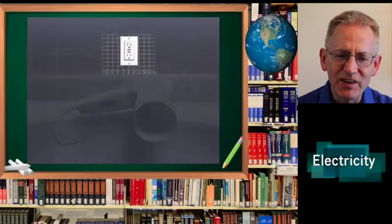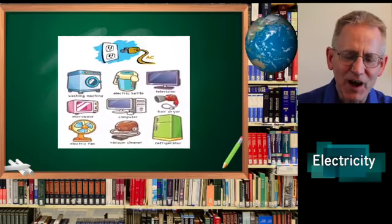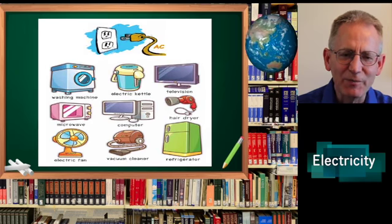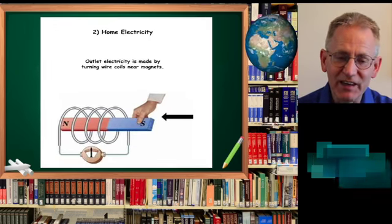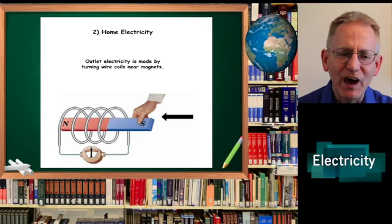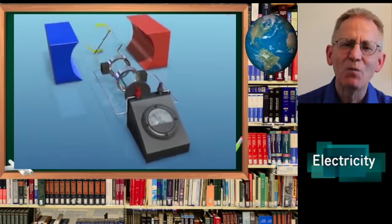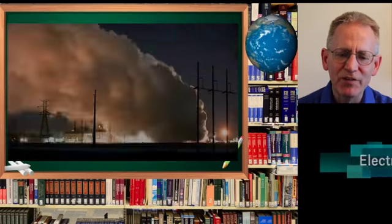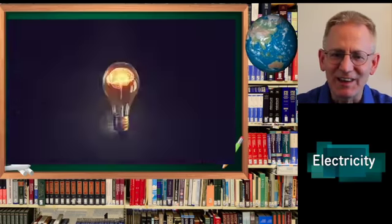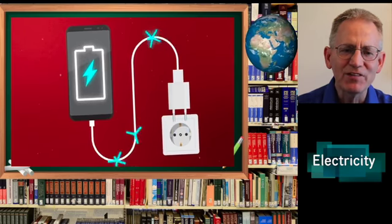Outlet or AC electricity powers our homes. Look at these different objects around us that are powered by electricity. Home electricity, called AC or alternating current, outlet electricity is made by turning wire coils near magnets. Wow! Electricity all around the world is made by simply turning wires near magnets. That's amazing! Smartphones use outlet electricity to power batteries inside.